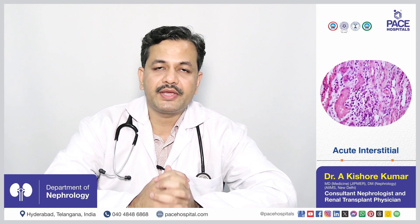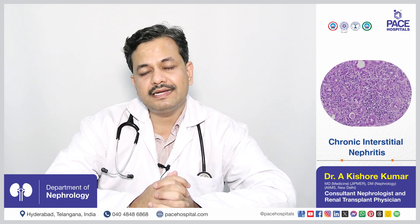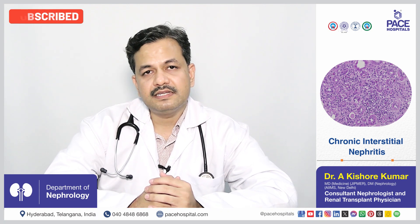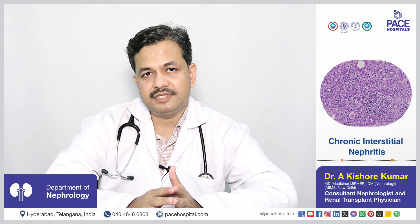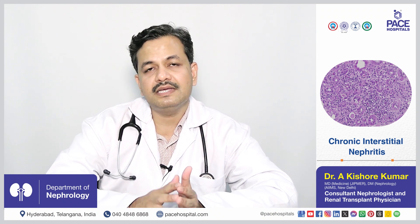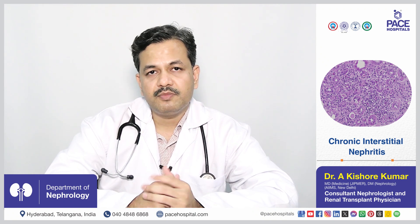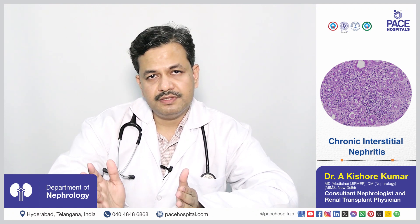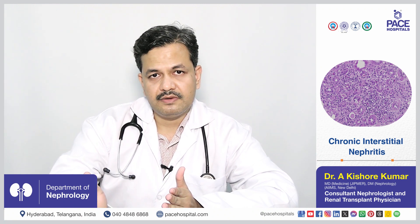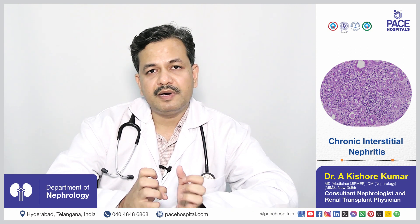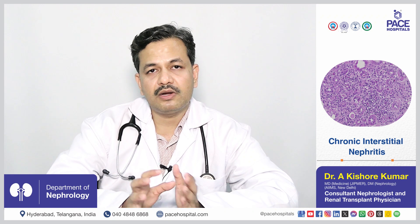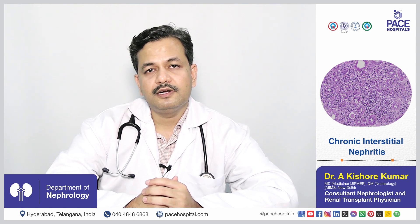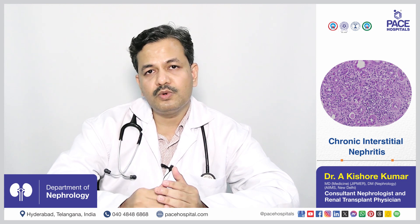There are two types of interstitial nephritis: acute and chronic. The mechanism is the same, but the difference is only the duration. If the kidney damage due to drugs or allergic reaction occurs for a short duration, it is called acute interstitial nephritis, which is predominantly reversible. If the damage is for a prolonged duration — many weeks to months — it is called chronic interstitial nephritis, leading to irreversible permanent kidney damage. This distinction is important to know the reversibility and prognosis.